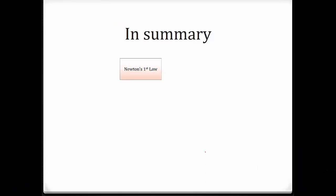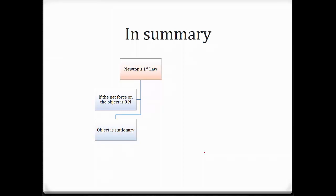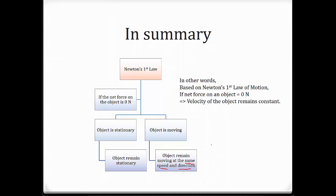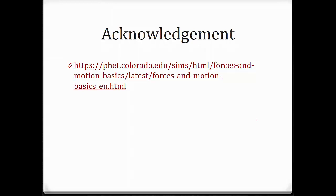In summary, Newton's first law describes the situation when the net force on the object is 0 Newton. If the object is stationary, it remains stationary. If the object is already moving, it remains moving at the same speed and direction. In other words, when the net force on the object equals 0 Newton, the velocity of the object remains constant — whether V equals 0 or V equals 5 meters per second. Velocity being constant means acceleration equals 0. That's the end of this lesson. Thank you.